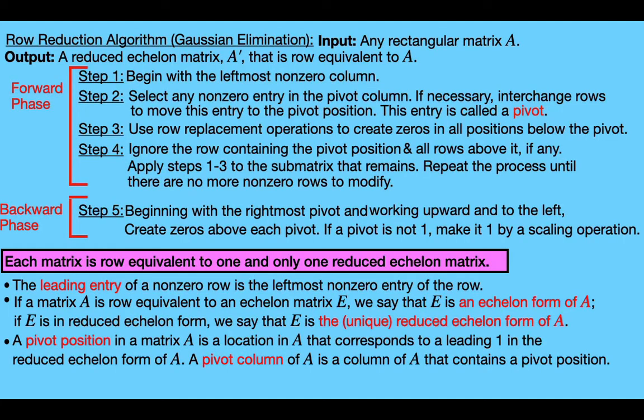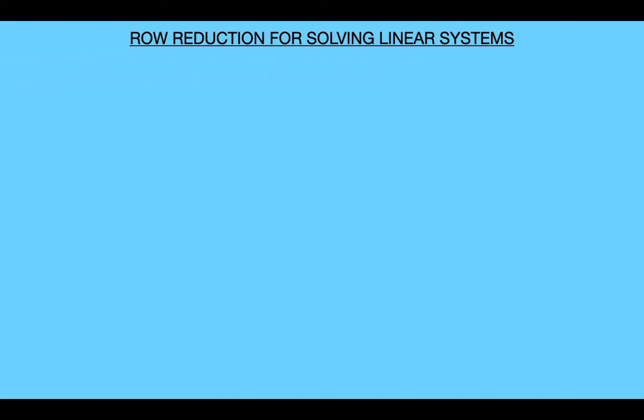Now before we start, you might want to pause the video here to review these definitions and theorems introduced in the previous videos, because we'll be referencing the stuff written here throughout this video. The top part here is just the row reduction algorithm. This is a theorem that tells us that the reduced echelon form of a matrix is unique. And then these are some important definitions that we'll be referencing throughout the video.